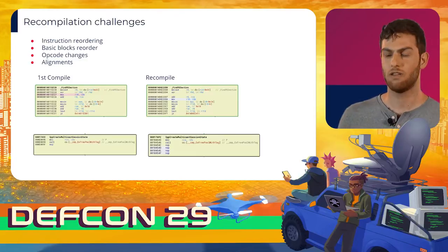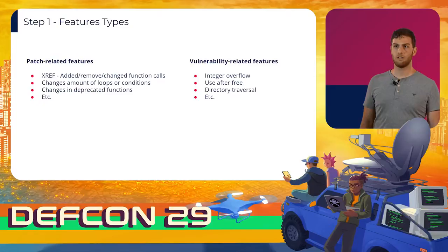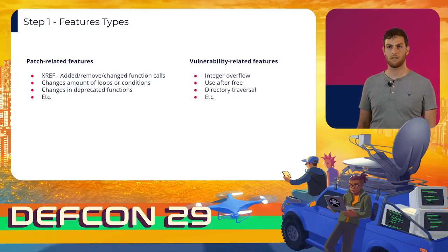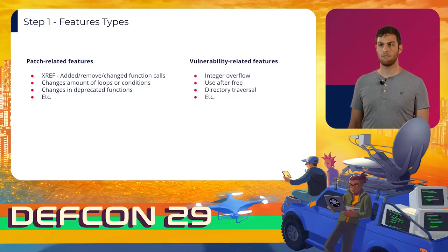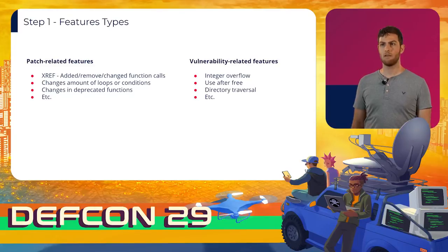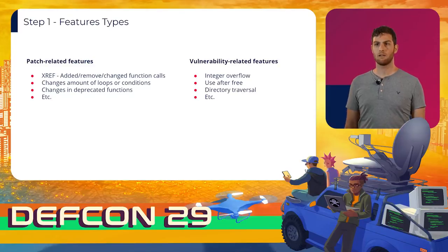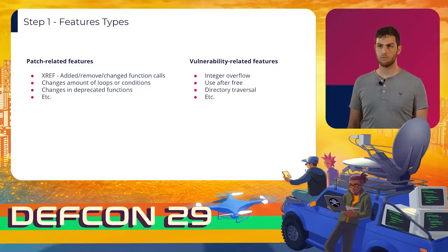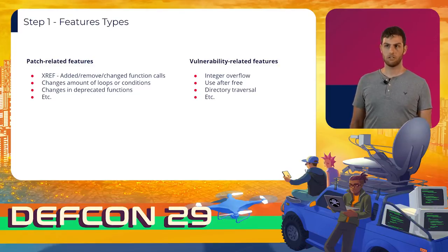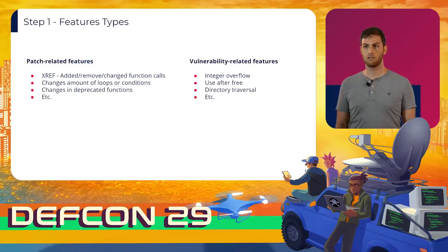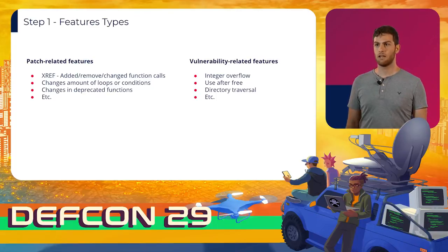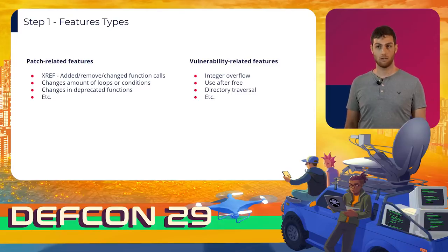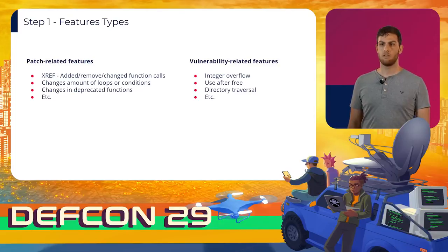We chose to reduce the compiler noise using features. Features group similar changes together and allow us to look for vulnerability patterns. We developed 33 features — most are at the function level, but others are at the executable level. Each feature is optimized differently: some are optimized for the lowest amount of false positives, while others give overview insights on the patch. There are two types of features: patch-related features and vulnerability-related features. Patch-related features group patches by the type of change made by Microsoft, such as adding a new function call, while vulnerability-related features group patches by vulnerability category, such as off-by-one or use-after-free.